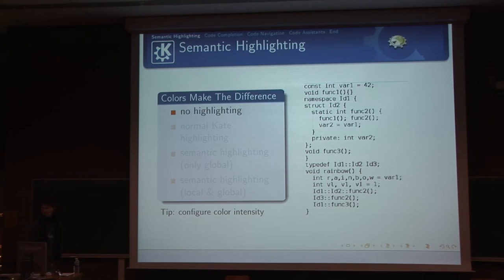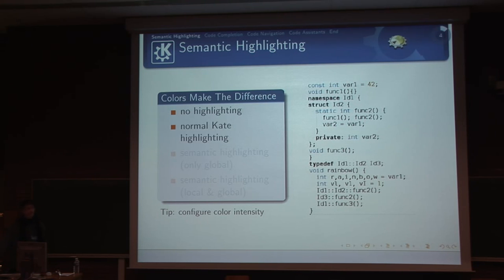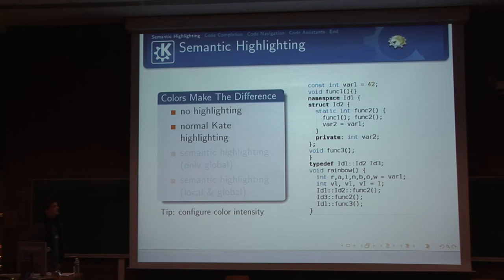Without highlighting, of course, it's not very good to find an overview. The normal editor just has a bunch of keywords it highlights. So it's better already, but you still cannot really differentiate at a single glance — what is the function, what is the typedef, what is the namespace, what is the custom class.